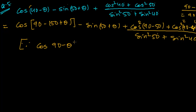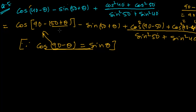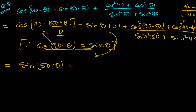We know the formula cos(90 minus theta) equals sin theta. Applying this: cos(90 minus (50 plus theta)) equals sin(50 plus theta), since (50 plus theta) works as a single theta. So that first term becomes sin(50 plus theta), which cancels with the minus sin(50 plus theta) — that's exactly why I was converting cos into sin.